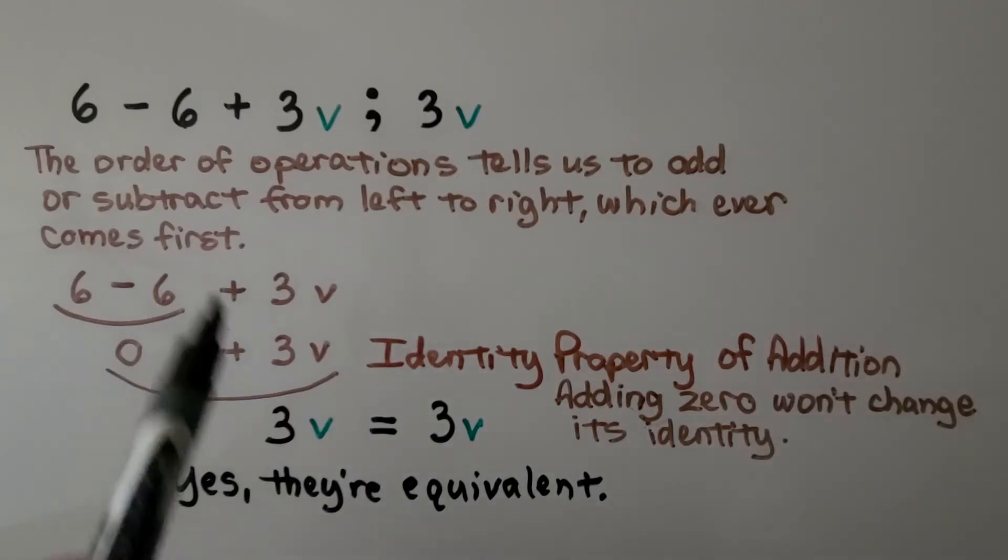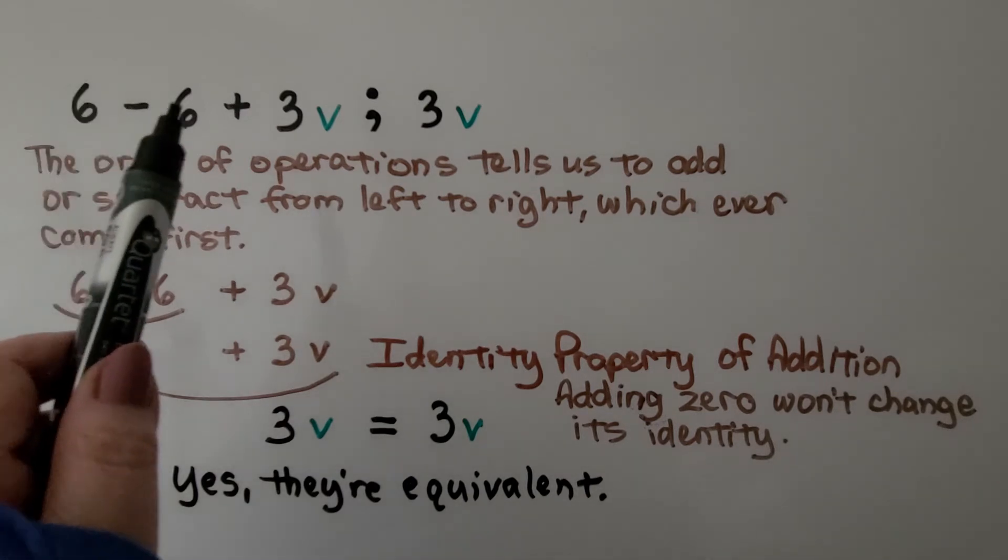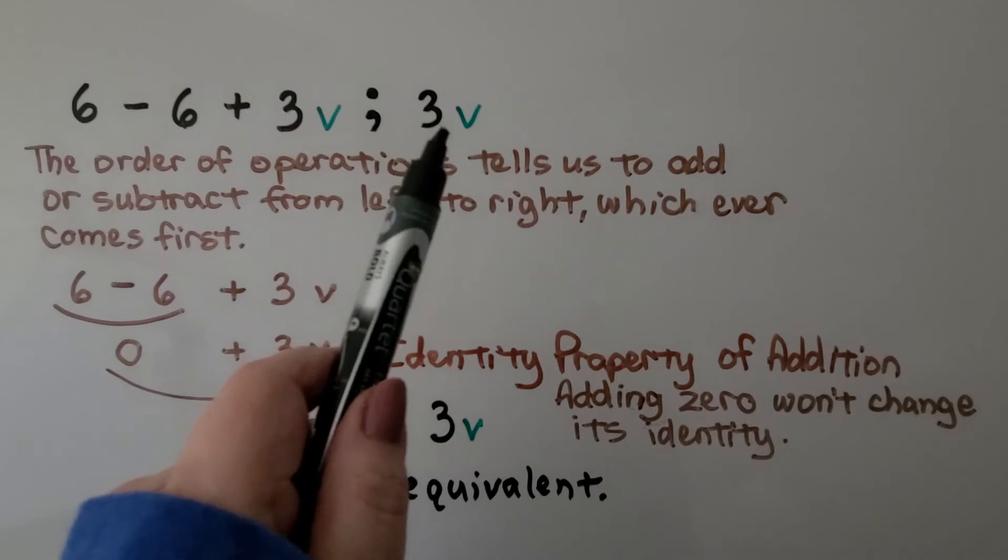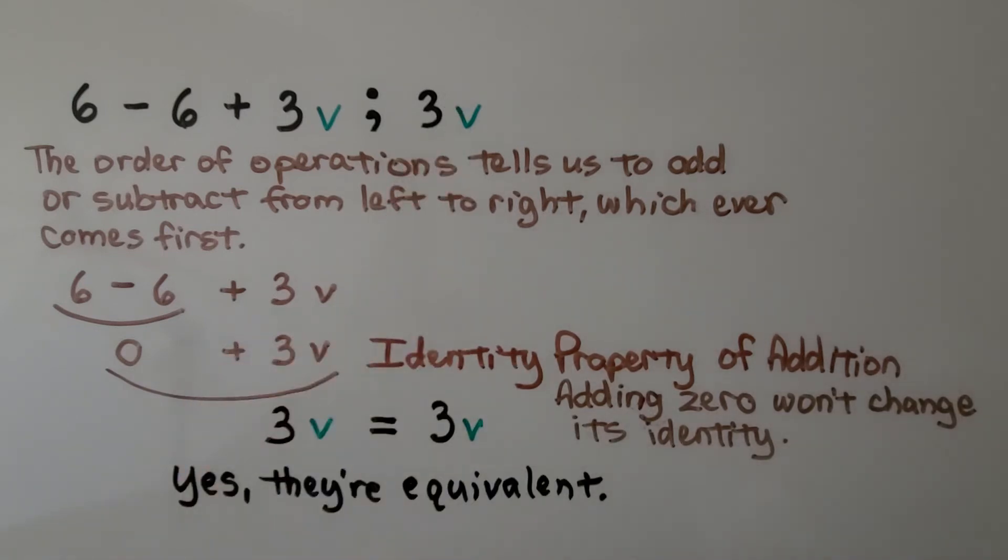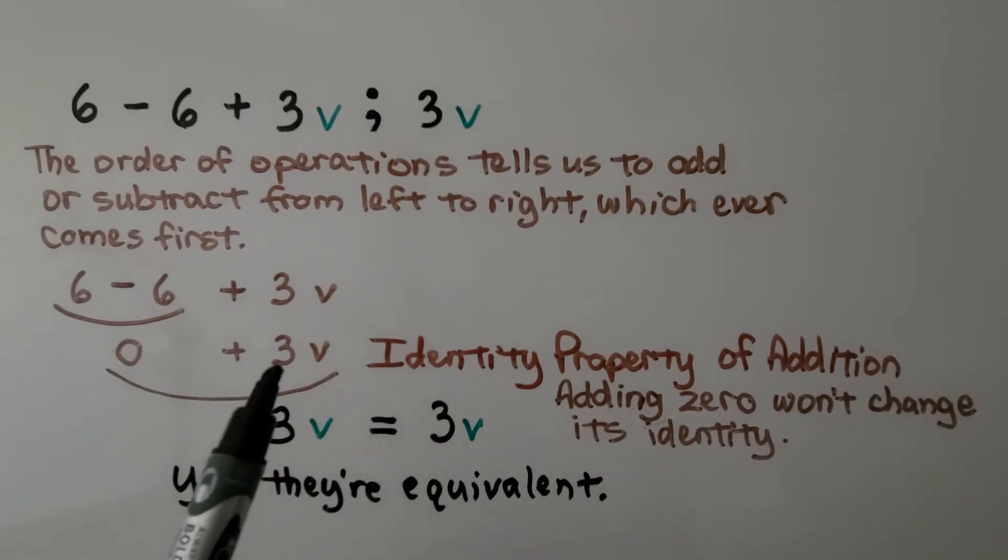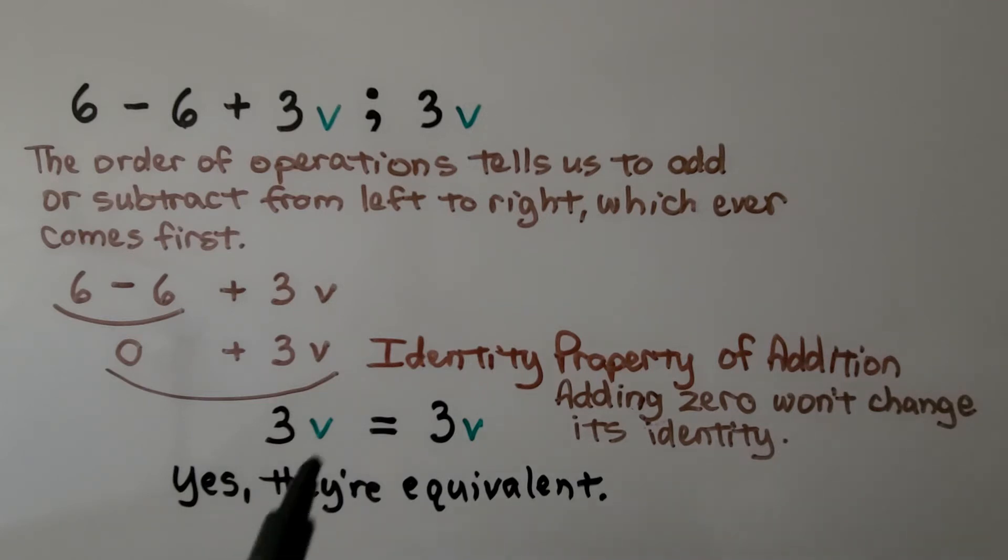Here we're comparing this expression, 6 minus 6 plus 3v, to 3v. And the order of operations tells us to add or subtract from left to right, whichever comes first. We have subtraction first. 6 minus 6 is 0. We have 0 plus 3v. And the identity property of addition says that adding 0 won't change its identity. So we have 3v equals 3v. Yes, they're equivalent.